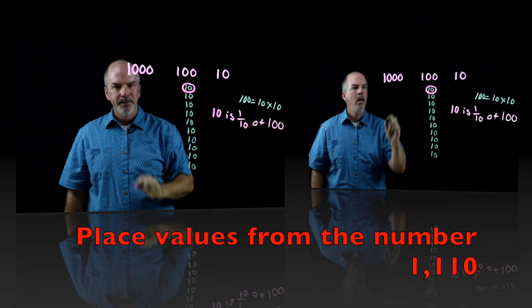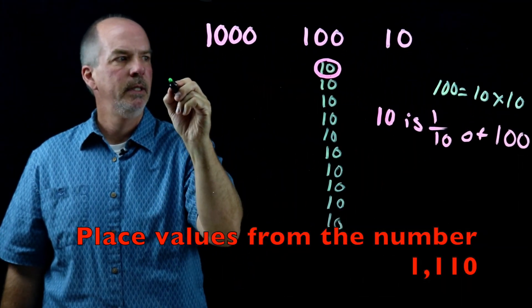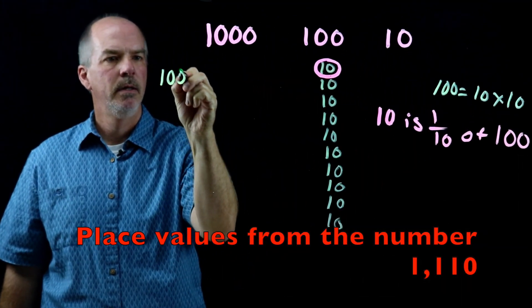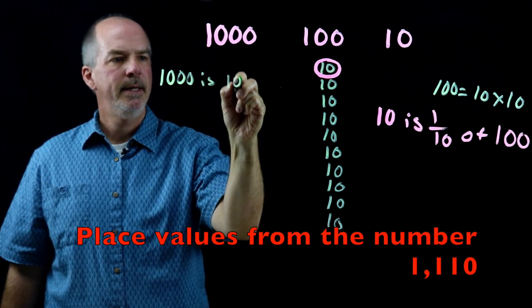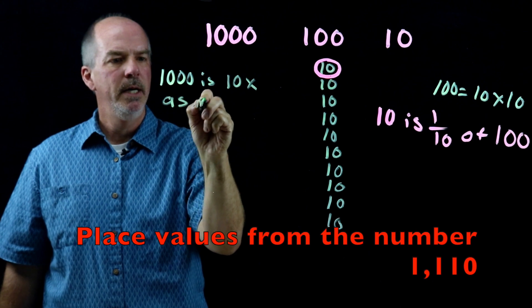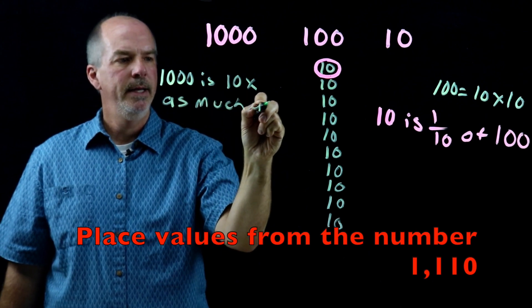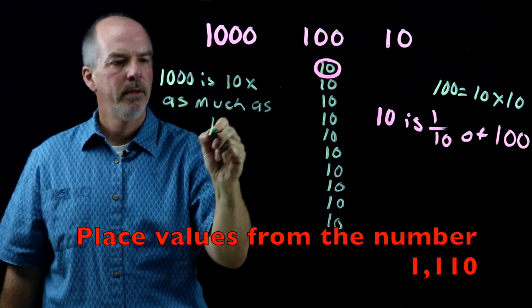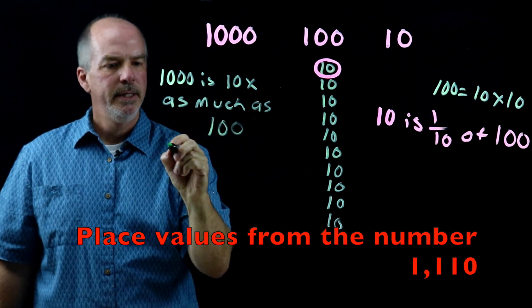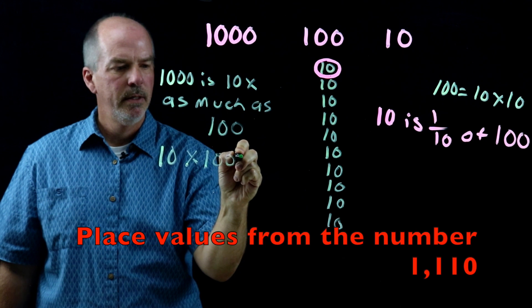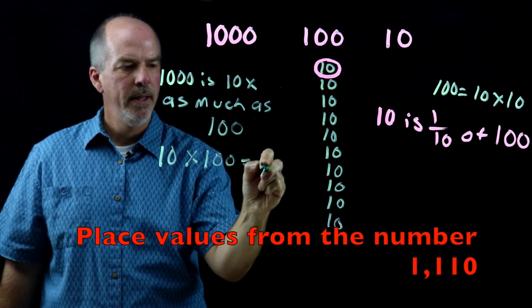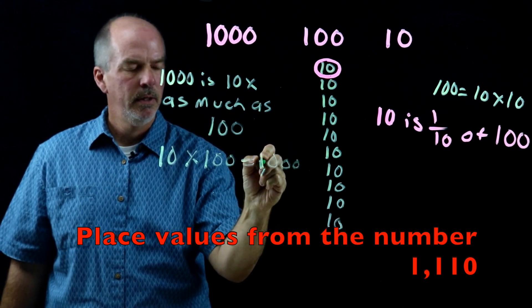Now let's go this way. I know that one-thousand is ten times as much as 100, because ten times 100 equals one-thousand.